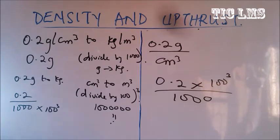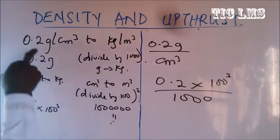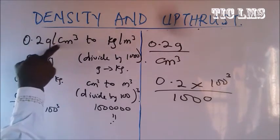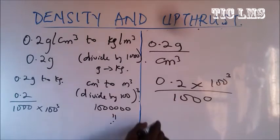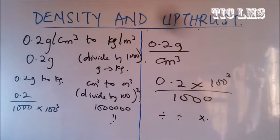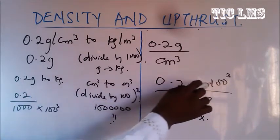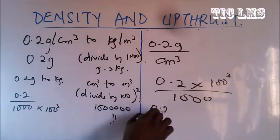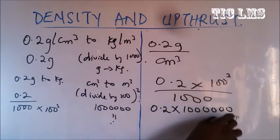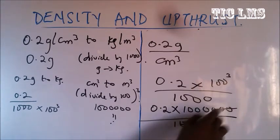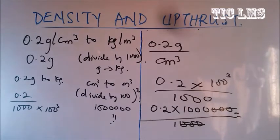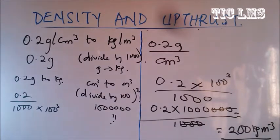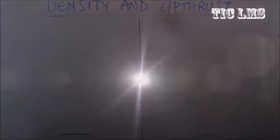We have 0.2 gram per cm cubed. Since it is already divided by cm cubed, when converting, instead of dividing by 100 cubed again, we bring it up to the numerator as multiplication. So we get 0.2 times 100 cubed divided by 1000. Simplifying, the powers of 10 cancel to give 0.2 times 1000 which equals 200 kilogram per meter cubed.